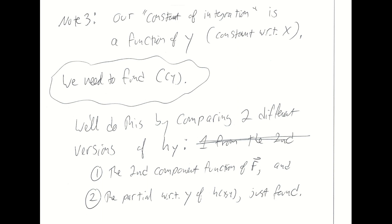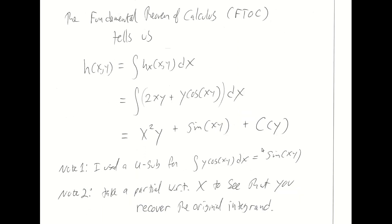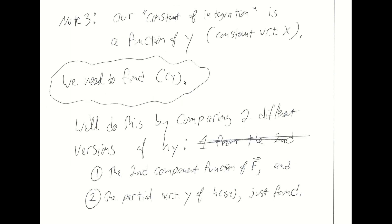We now have an expression for little h, except that it involves this unknown function of y. We need to find c(y). Once we have c(y), I can plug it in and have a full expression for little h. I'm going to find c(y) by comparing two different versions of h sub y. We'll be able to write down expressions for h sub y in two different ways, and by comparing those two expressions, we should be able to determine what c(y) is.